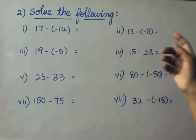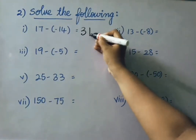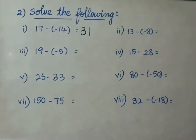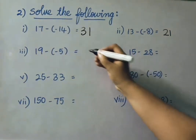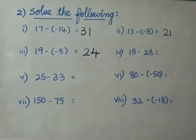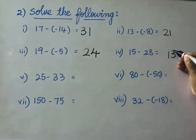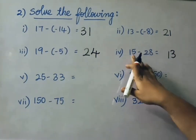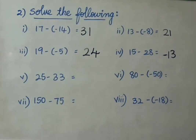See the second sum — solve the following. 17 minus of minus 14 — that means 17 plus 14, that is 31. 13 minus of minus 8 — that means 13 plus 8, that is 21. 19 minus of minus 5 — that means 19 plus 5, that is 24. 15 minus 28 — opposite signs, so do subtraction: 28 minus 15 is 13. Which is greater? 28, and its sign is minus, so the answer is minus 13. 25 minus 33 — opposite signs, 33 minus 25 is 8. 33 is greater with minus sign, so the answer is minus 8.